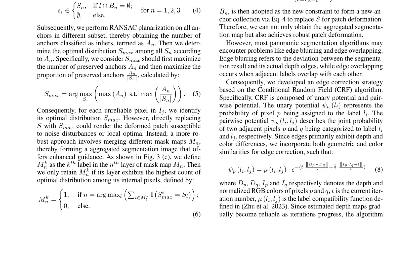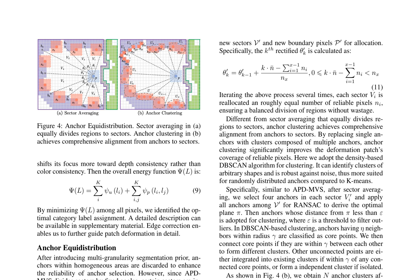By leveraging the multi-granularity segmentation prior and edge correction strategy, the authors aim to improve the coherence and clarity of depth edges, providing more accurate and robust panoramic segmentation results. The authors introduce the concept of anchor equidistribution, a method that improves the reliability of anchor selection in patch-based MVS algorithms. This process involves two key components: sector averaging and anchor clustering.